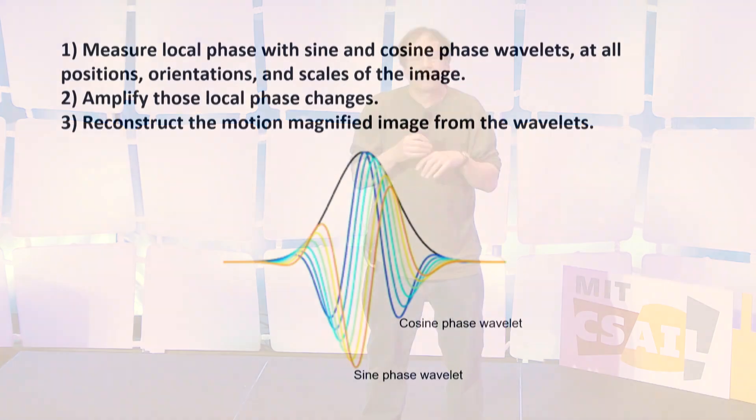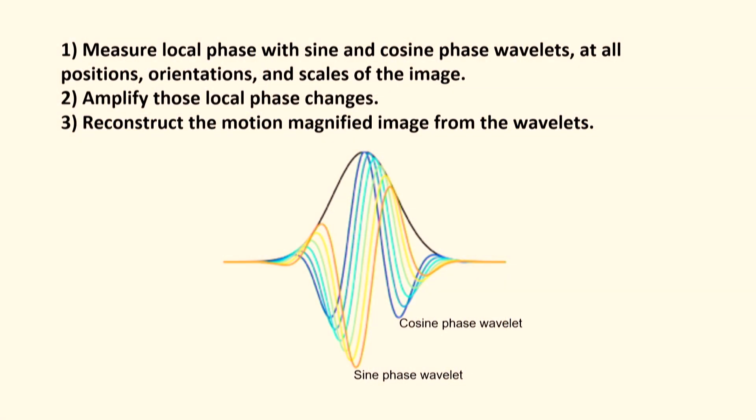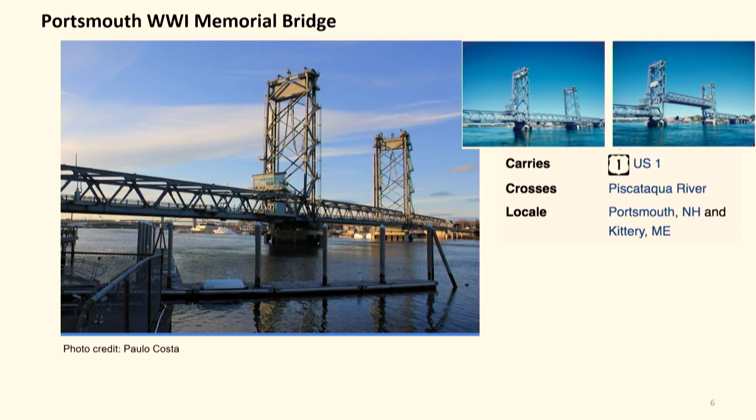It's kind of brain-dead simple. You take the image, transform it into this wavelet representation, measure the change in phase at some temporal frequency that you might be interested in, amplify that change in phase — so if it's becoming a little bit like a sine wave, make it a whole lot more like a sine wave — and then transform back to the pixel representation. Do that frame by frame, and you get the result. It's really rock solid, it works very well. It's a signal processing technique.